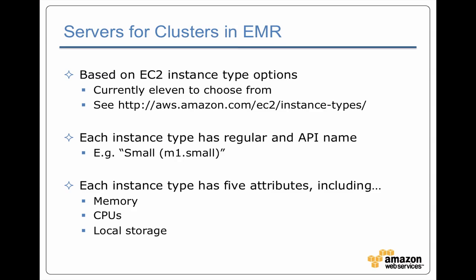In that pop-up list, you saw that every instance type had two names. The first name is sort of the friendly name, the regular name. And then in parentheses, it has the API name, which is what you use when you're using things like the command line tools to define what instance types you want to use.